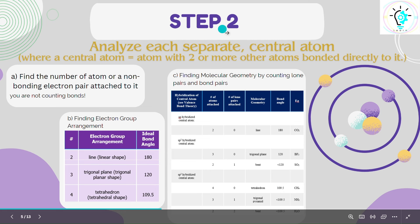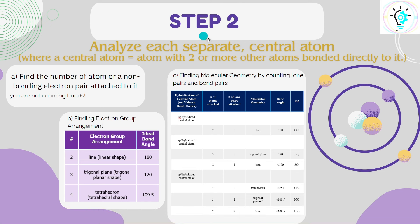The next step in VSEPR theory is to analyze each central atom separately — talking about the atom with two or more atoms bonded directly to it. First, we will determine the number of atoms or non-bonding electron pairs attached to it, not counting the bonds. In the next step, we will find the EGA, or the electron group arrangement.